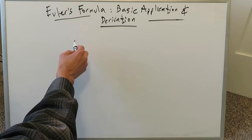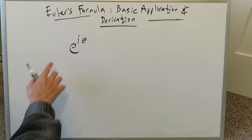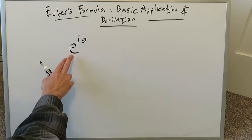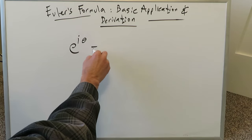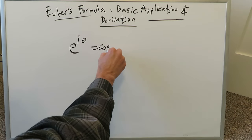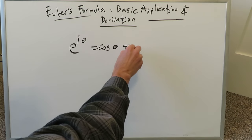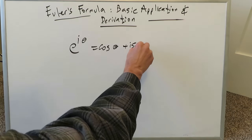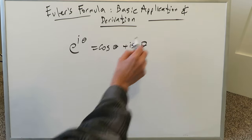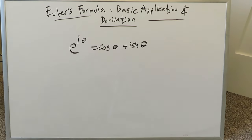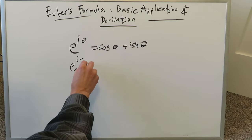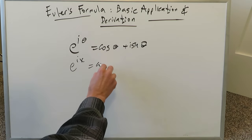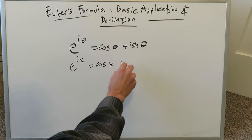What exactly is Euler's formula? You can present it as e to the power of i theta, which is equal to cosine theta plus i sine theta. Where you have the theta, you can easily replace it with x. It doesn't matter — either way is fine.